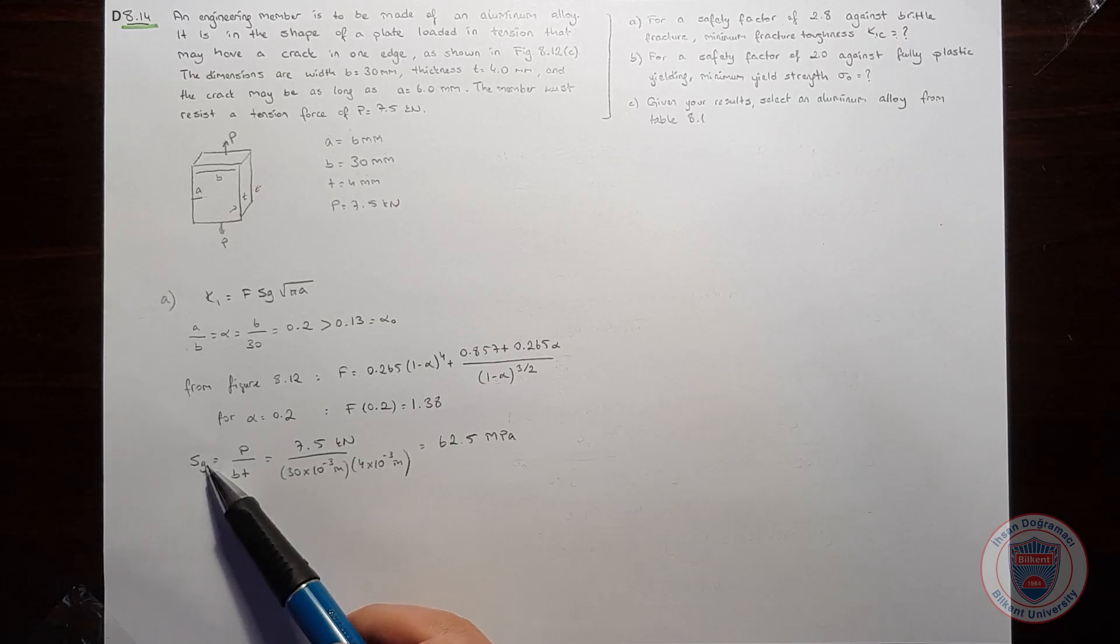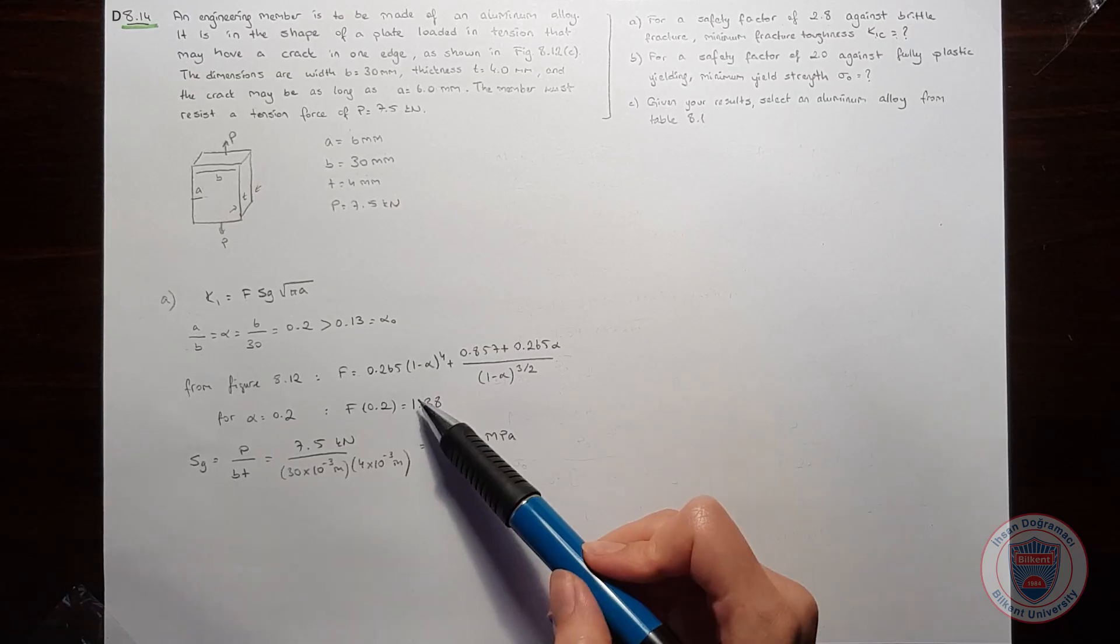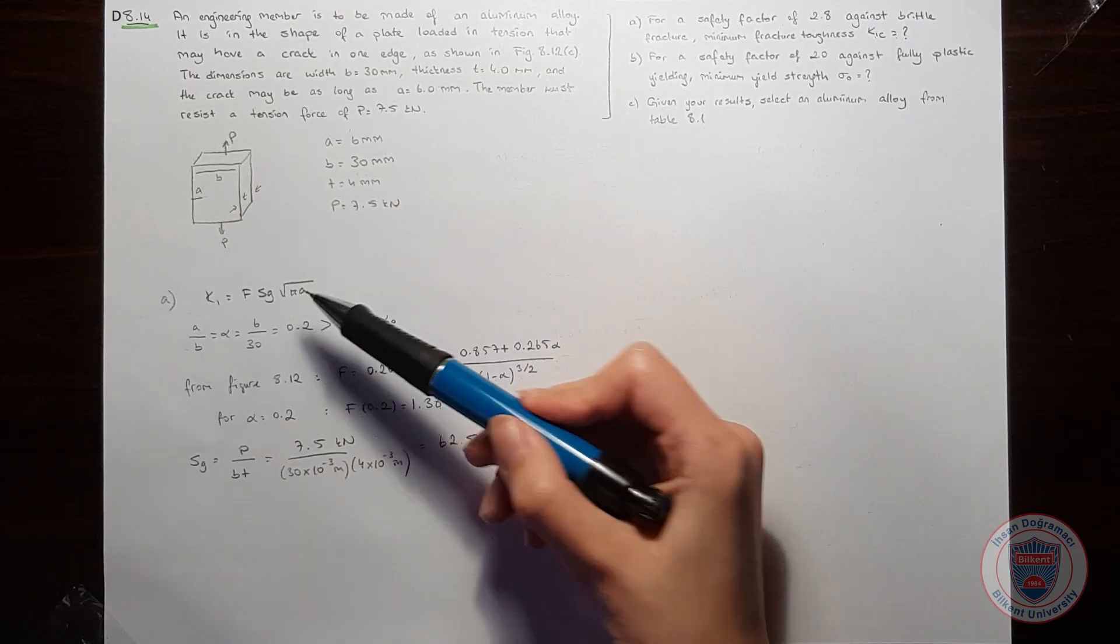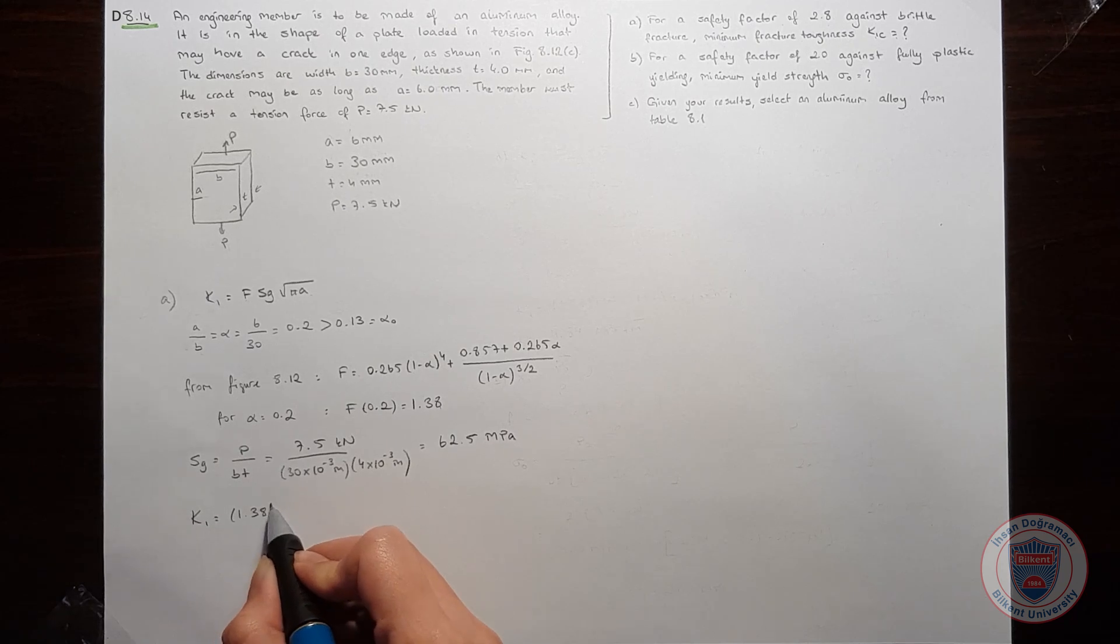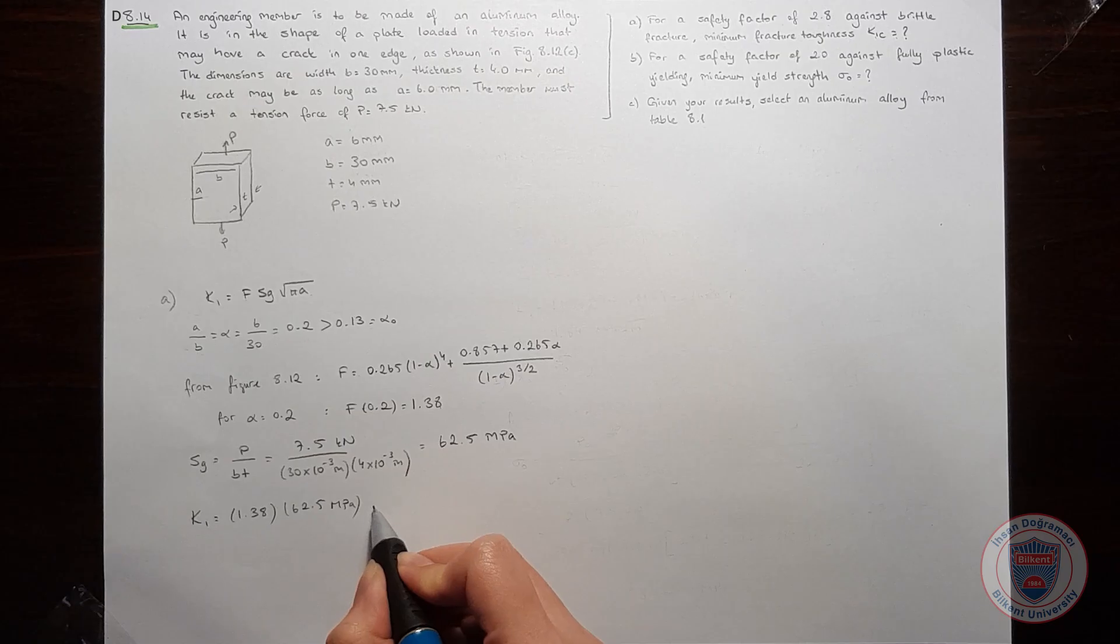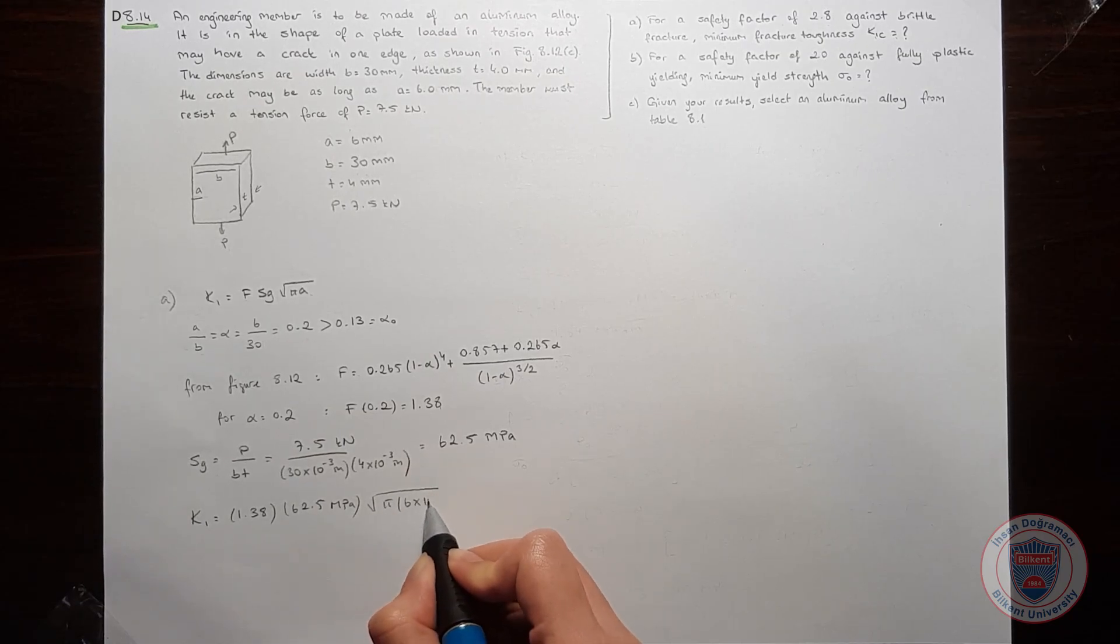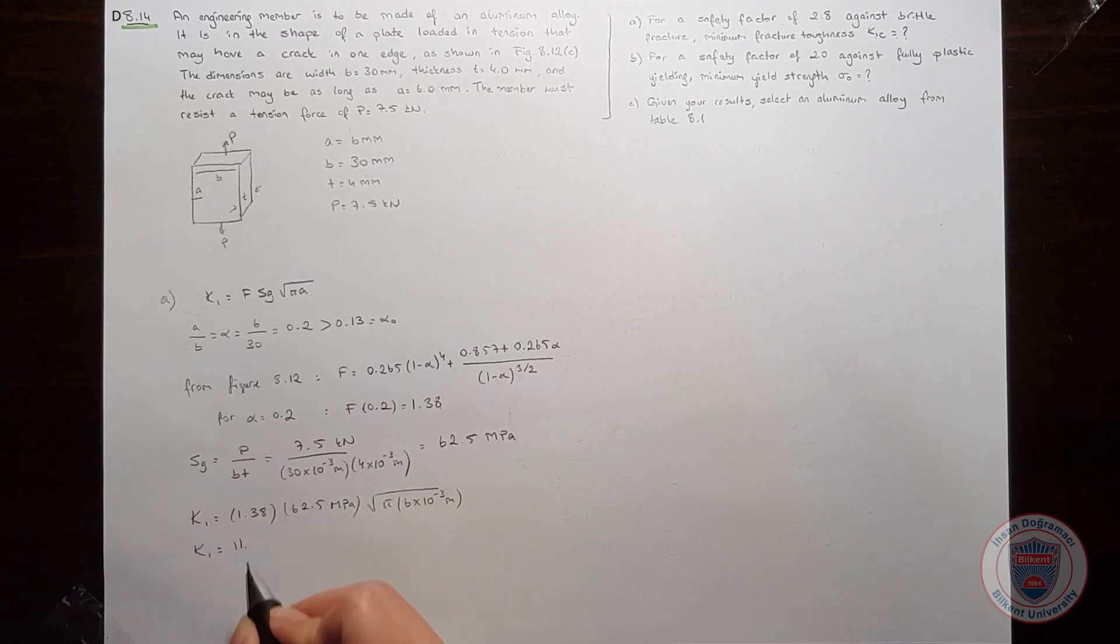Now we know SG and we know the form factor, and we are given A. So we can easily find K1. Let's substitute the values. And we obtain K1 as 11.84 MPa square root meters.